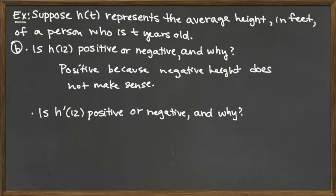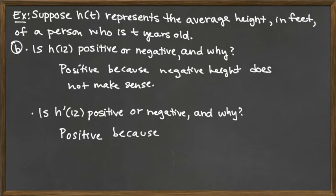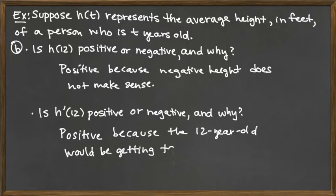What about h prime of 12 — is it positive or negative and why? When we're talking about h prime, we're talking about the rate of change, like the rate of growing or perhaps shrinking. Would a 12-year-old be growing or shrinking? Definitely growing. So if the 12-year-old is growing, we're talking about a positive rate of change — positive because the person would be getting taller.